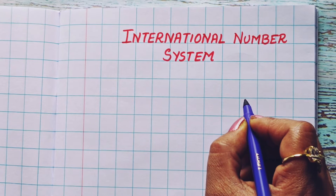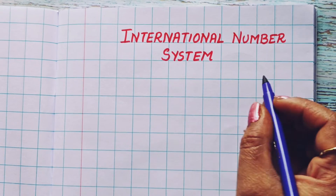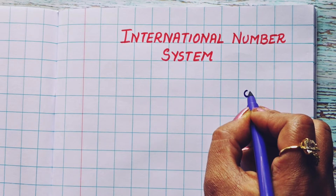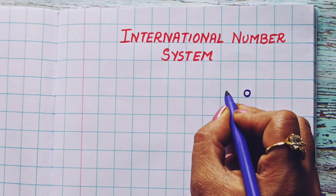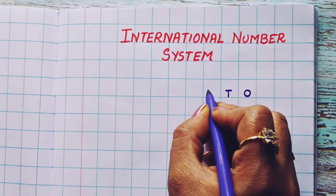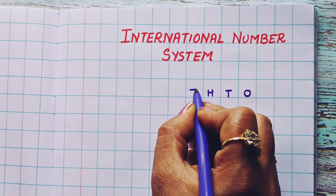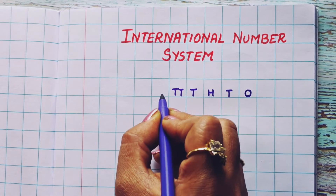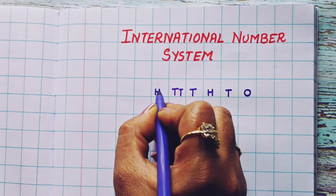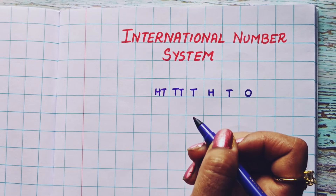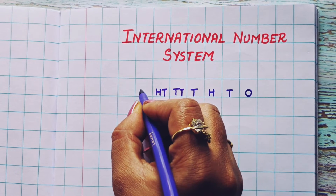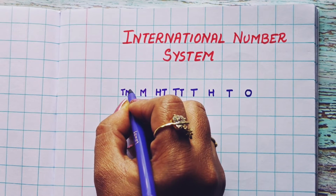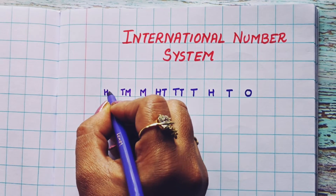Again, first we are going to write the places of numbers. We write first the ones place, then the tens place, hundreds, thousands, ten thousand. After ten thousand, we get hundred thousand, then we get million, then ten million, and then hundred million.